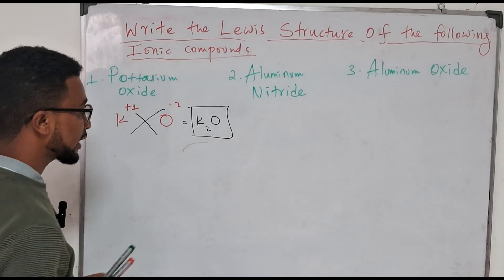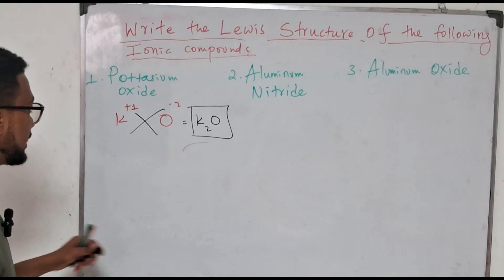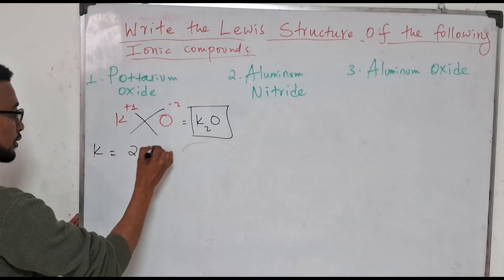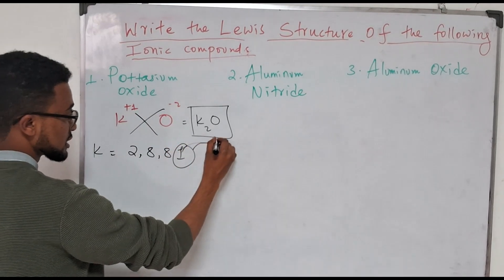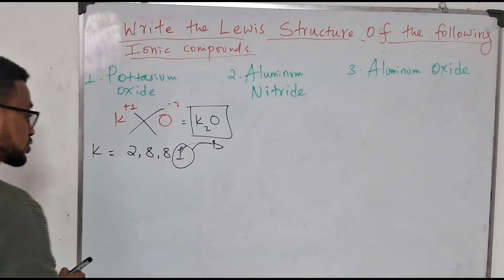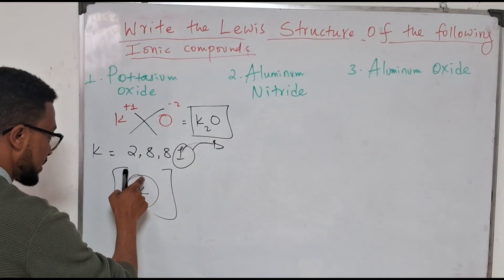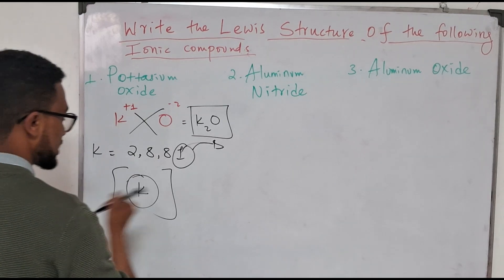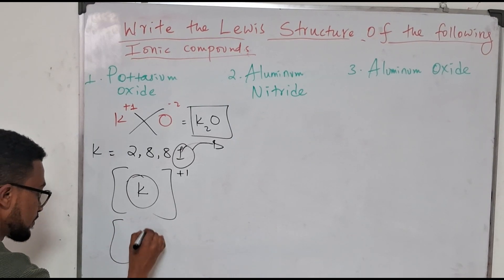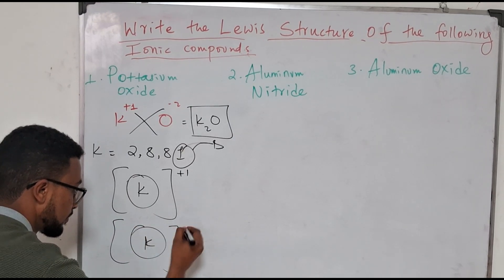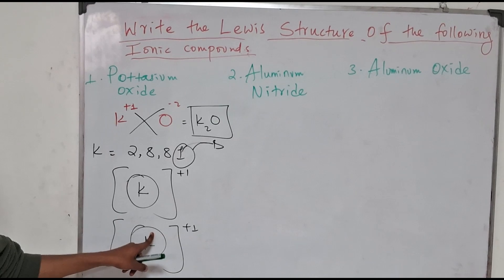When writing Lewis structures, we only consider the outermost shell. Potassium has the configuration 2, 8, 8, 1, but as a potassium ion it has already lost that electron, so the last shell will have zero electrons. We have two potassium ions, each with a +1 charge. Two potassium atoms have each lost one electron, for a total of two electrons lost.